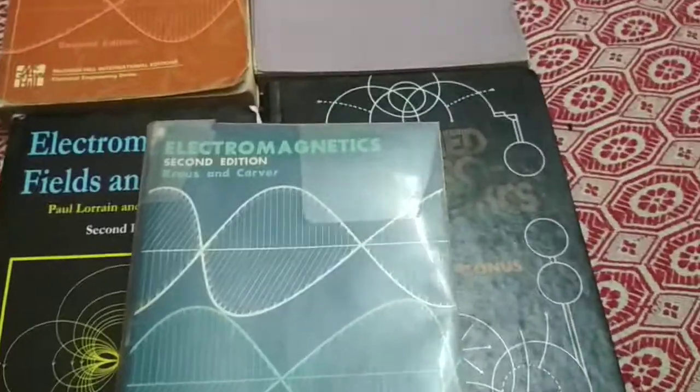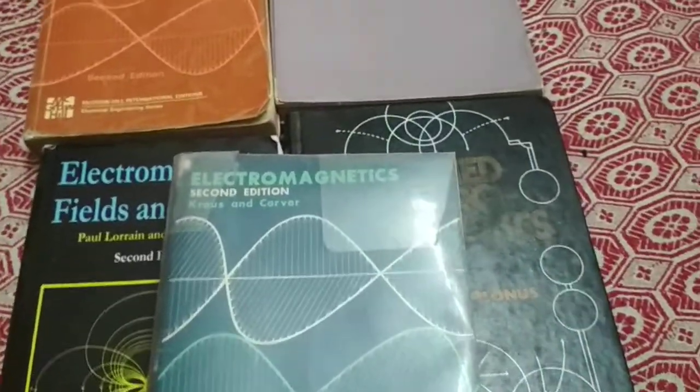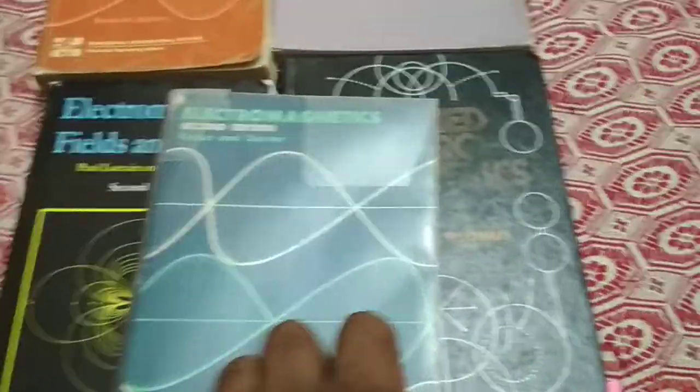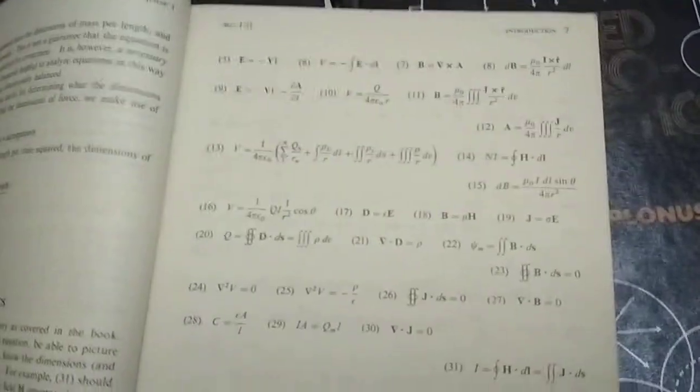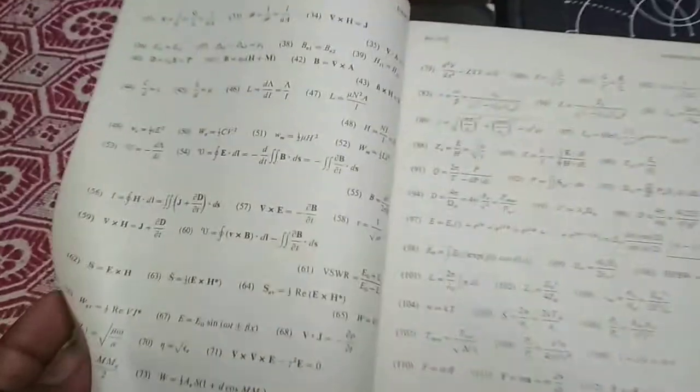This textbook is beginner-friendly in many ways. It has mathematical depth but doesn't go into detailed mathematical derivations of everything. As you can see, these few pages have a list of all important equations of electromagnetics given at the starting of this book.